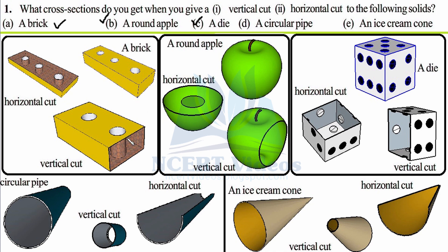Then, a circular pipe — you have seen circular pipes carrying water to your house. When you make a vertical cut, you get a smaller pipe section, and this cross section is of circular shape. But when you cut it horizontally, you get a semicircle. So the cross section attained after cutting a circular pipe horizontally is a semicircular cross section.